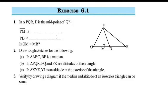From the introduction video, what is the median and what is the altitude? A median is a line segment from a vertex to the midpoint of the opposite side. An altitude is a line segment from a vertex perpendicular to the opposite side.